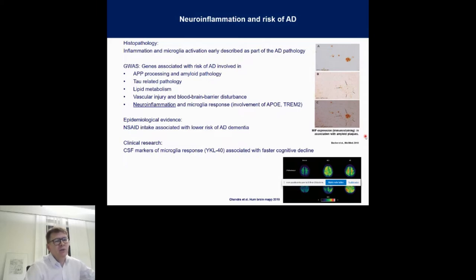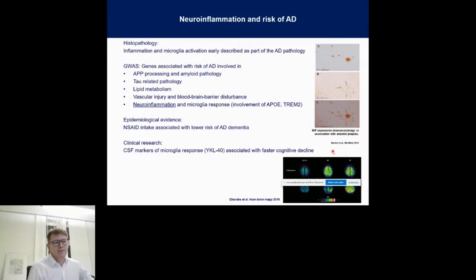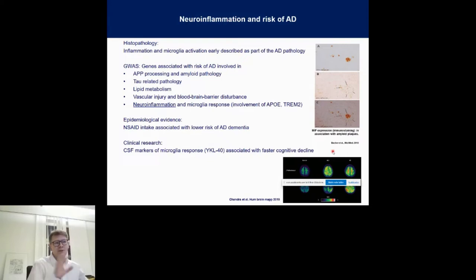There is also epidemiological evidence. It was observed that people treated with non-steroidal anti-inflammatory drugs over a longer time had lower risk of developing AD dementia. There is also more recent evidence that some markers — actually markers of microglia response and inflammatory activity — occur in Alzheimer's patients and are related to faster cognitive decline over time. There is also evidence from imaging studies using ligands that show inflammation is stage-dependent; in the early stages it is associated with amyloid pathology, but later, seemingly, this is not the case.